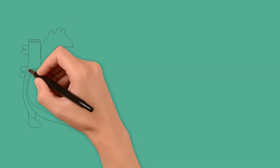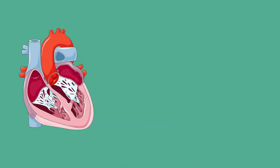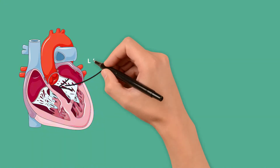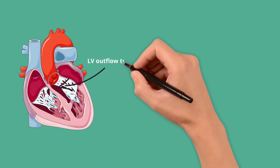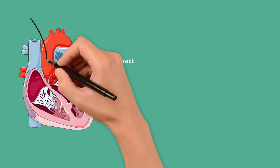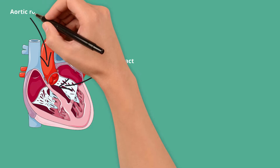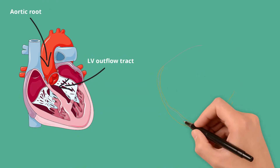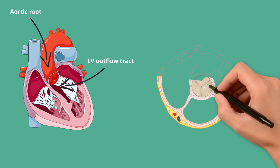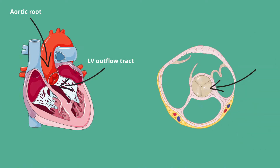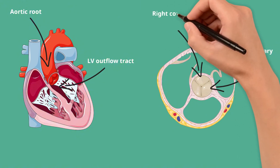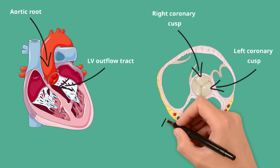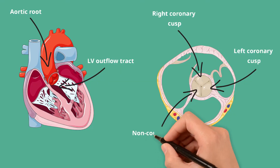The aortic valve separates the left ventricular outflow tract from the aortic root. Its purpose is to allow the flow of blood into the aorta in systole when the LV is contracting, and to prevent backflow in diastole when the LV is relaxing. The normal aortic valve has three leaflets: the left and right coronary cusp, which correspond to the location of the origin of the left and right coronary arteries, as well as the third non-coronary cusp.